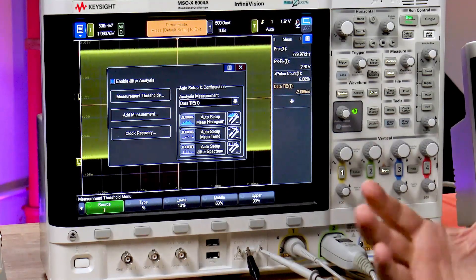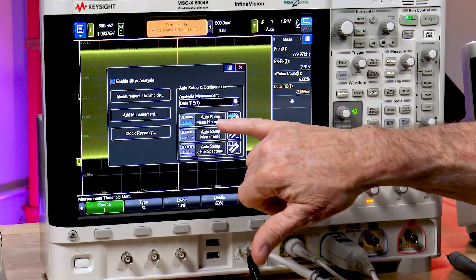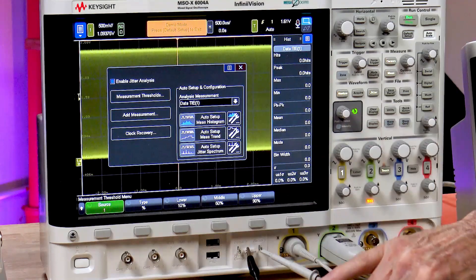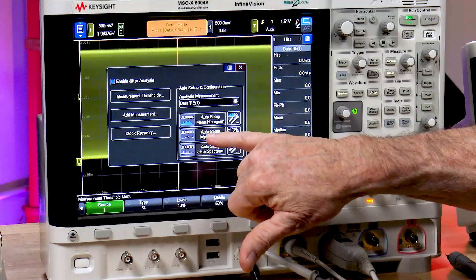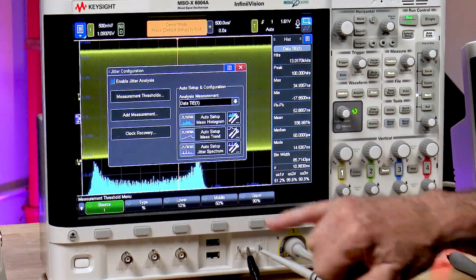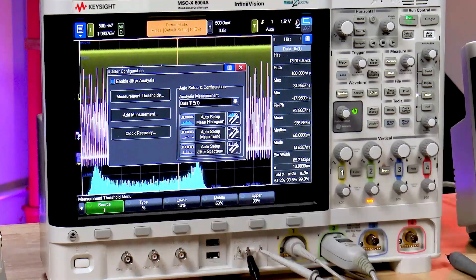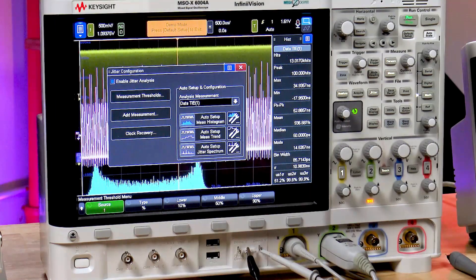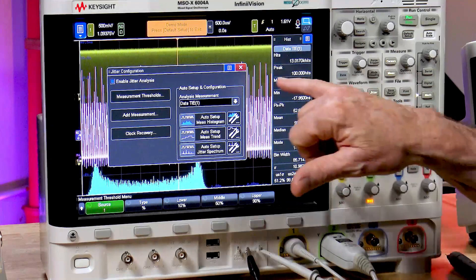Now, how do we want to view the jitter? We can select measurement histogram, measurement trend, and jitter spectrum. Those are the three different views that we have of jitter.